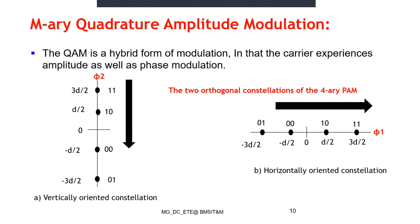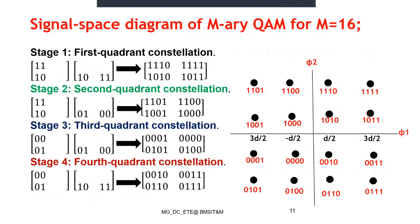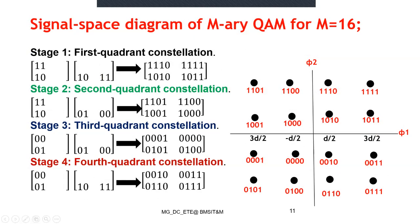These message points are Gray encoded, meaning only one bit changes between adjacent symbols. For example, 1110 and 1111 differ by only one bit, and 1010 and 1011 also differ by only one bit. This holds true for all quadrants — first, second, third, and fourth. Starting from four zeros, each adjacent symbol differs by only one bit.